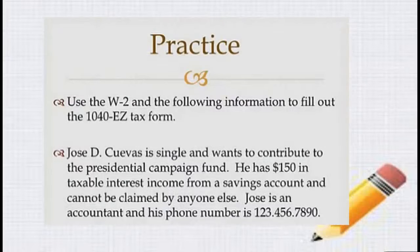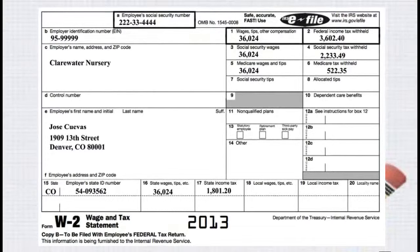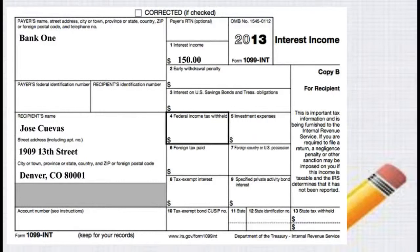Let's try a practice. We're going to use the W-2 and the following information to fill out a 1040EZ tax form. In this case, Jose is single. He wants to contribute to the Presidential Campaign Fund, which is a box you can check on your 1040EZ. He has $150 in taxable interest income from a savings account. He is not a dependent — he can't be claimed by somebody else. He's an accountant. Here's a copy of his W-2 showing wages of $36,000, and here's a copy of his 1099 showing the interest that he earned. He is under the unearned income threshold and can file a 1040EZ.